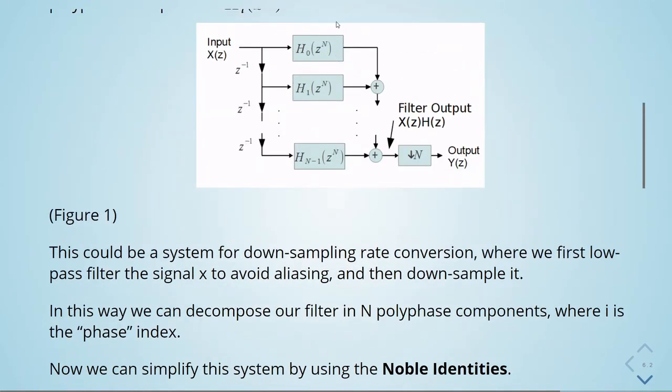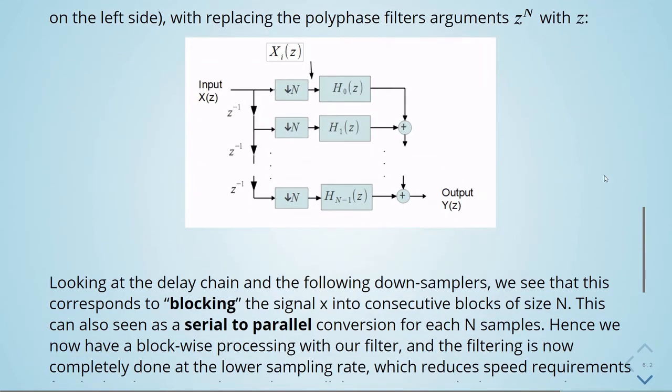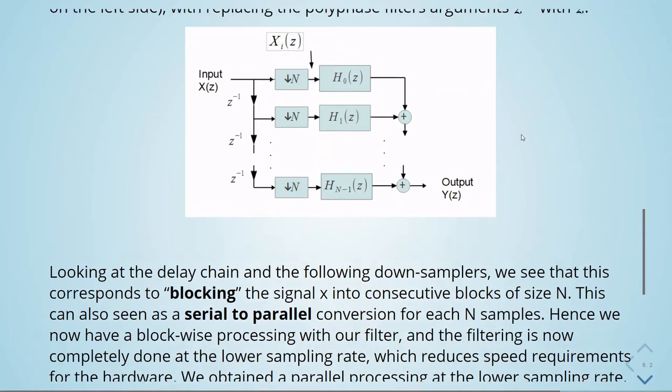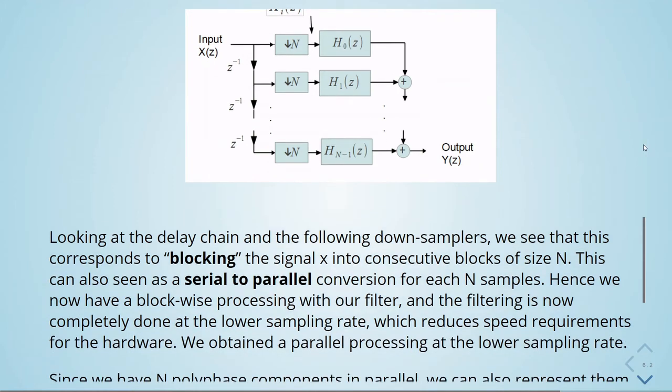Looking at the delay chain and the following down-samplers, we see that this corresponds to blocking the signal x into consecutive blocks of size N. This can be seen as a serial to parallel conversion for each N samples.